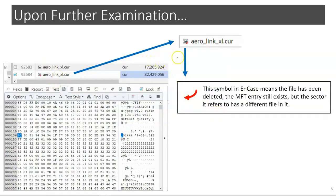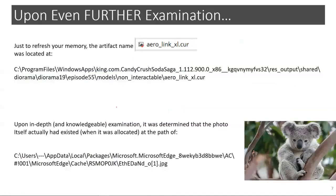So let's look at it a little closer. What we see — this symbol here, this little arrow — in NCASE that means the file's been deleted, but the MFT entry still exists, but the sector it refers to has a different file in it. You have to know this to understand what you're seeing. So here is, again, what we found.